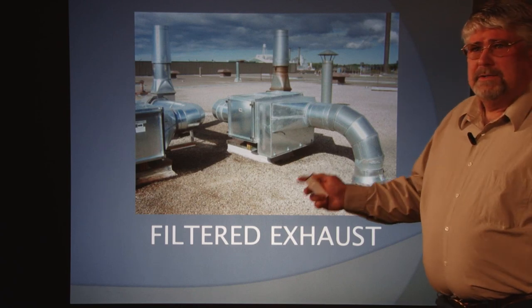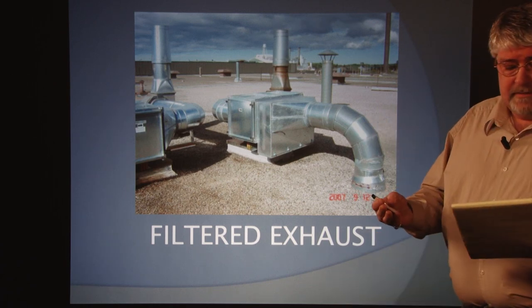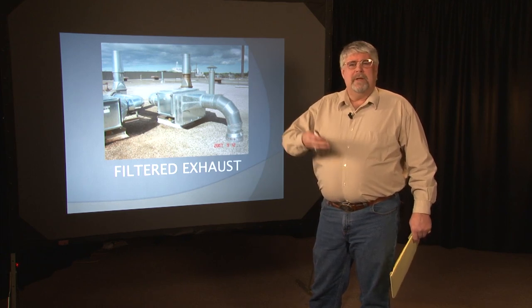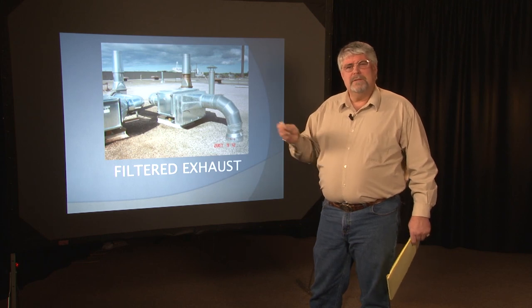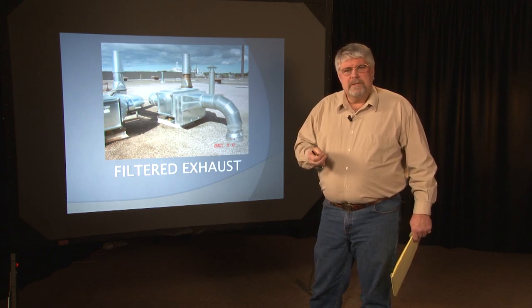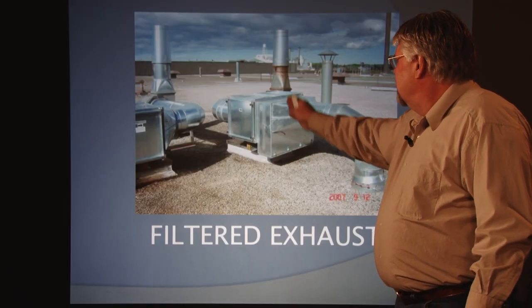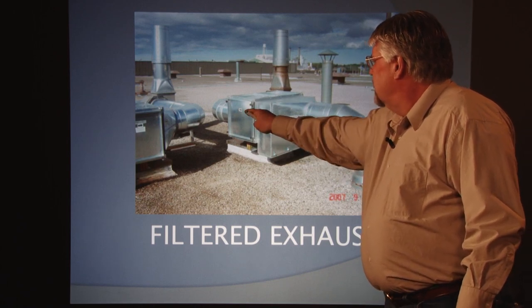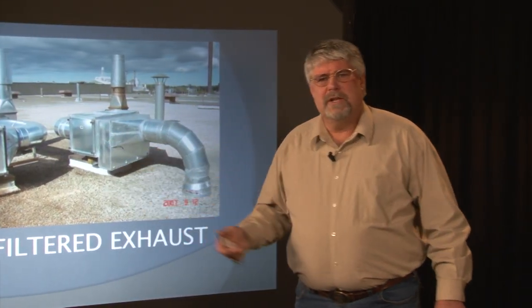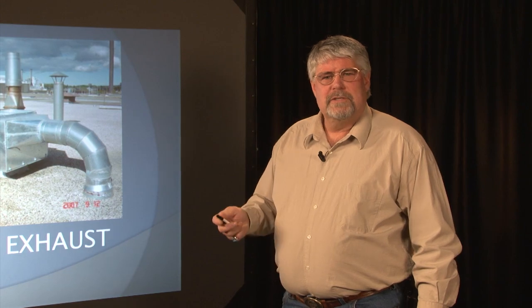Filtered exhaust. Basically filtered exhaust is an exhaust system, usually on the roof, that has a filter on it. The reason it's filtered is that the warehouse or commercial property may have paint fumes or chemicals that need to be filtered before being exhausted to the outside air to meet EPA requirements. What we've got here is an exhaust system with a pipe coming in, a filter, then up and out to the outside air. There's a hatch where a maintenance person can get in and change the filter.